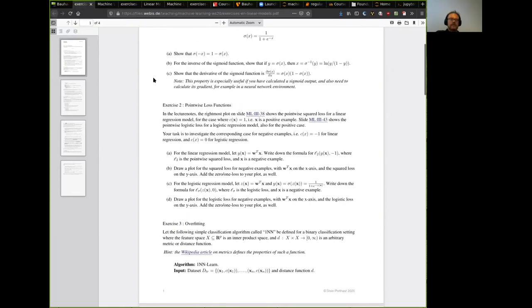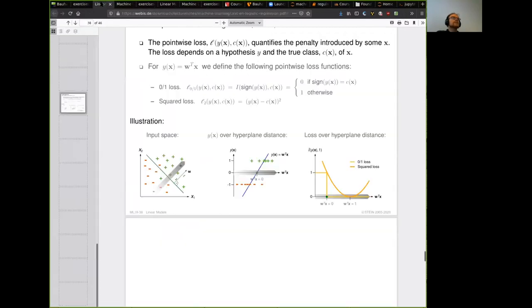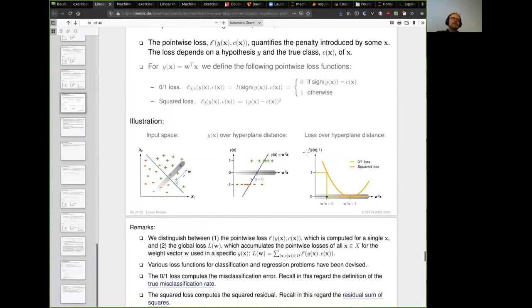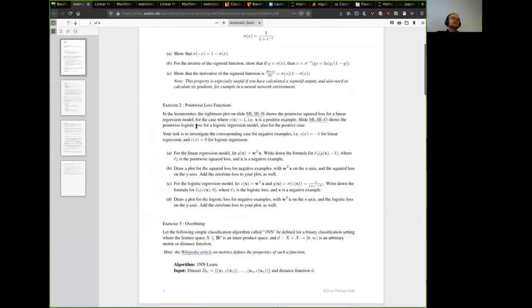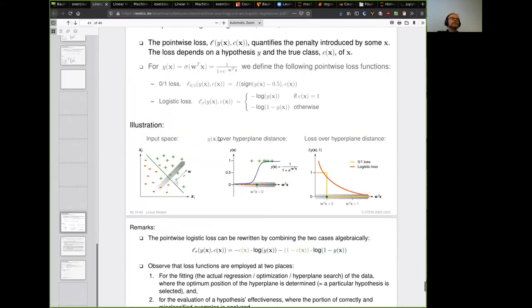Okay, next question, exercise two is about pointwise loss functions. It refers to some slides from the lecture where we have shown the pointwise squared loss for a linear regression. Let's open this up again here, this slide, and we're always talking about this plot in the bottom right corner here, where to recap, we show how the loss function develops as a positive example moves in direction of the normal of the decision boundary. And your task in this exercise will be to look at the same thing for negative examples for the squared loss in the linear regression context and also for the logistic loss and the logistic regression context. So what we want is these curves for the case where the example here is a negative one, so that means that there is a zero here instead and we are looking at these points.